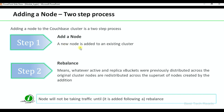In the first step, a node is added to an existing cluster. In the second step, we will do a rebalance, which means whatever active and replica vbuckets are previously distributed across the cluster are redistributed across the superset of nodes created by the addition. You may add one node or a couple of nodes at a time to the cluster and then do the rebalance.